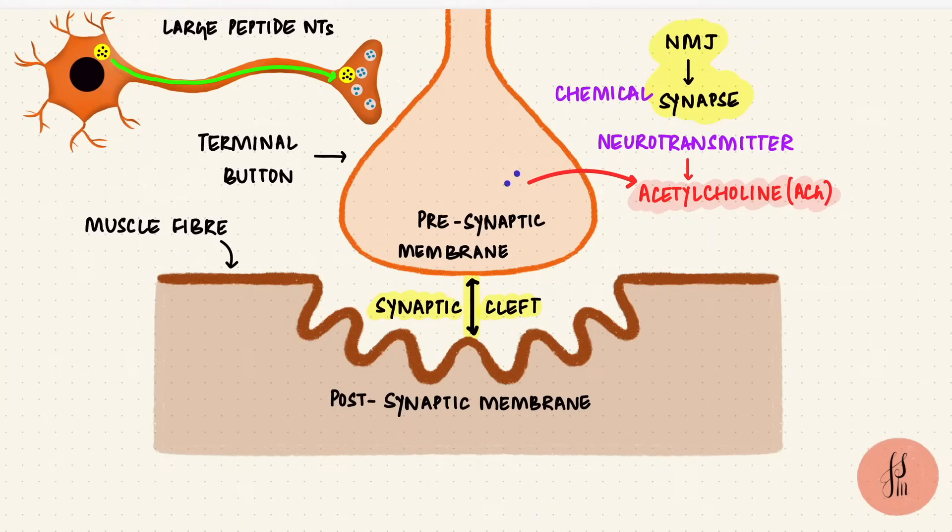But acetylcholine is a small molecule neurotransmitter. It gets synthesized in the terminal itself, and then packaged into vesicles. But the vesicles with the proteins in their walls, those are formed in the cell body and then transported down.